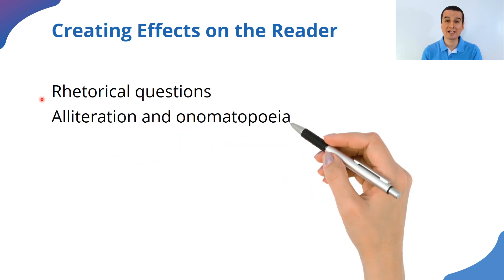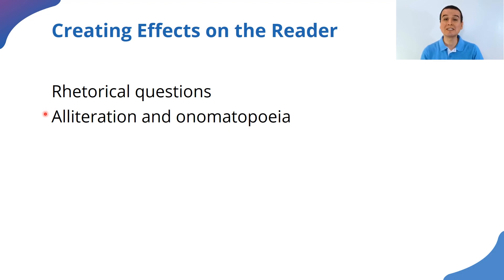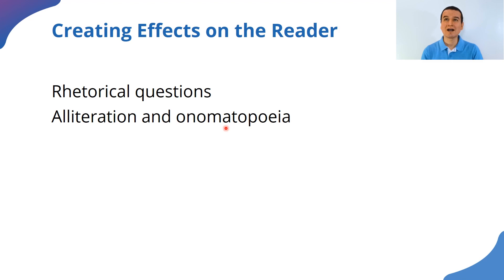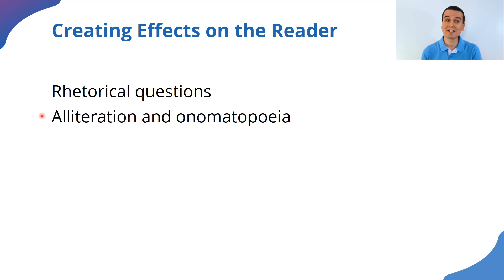Another resource for creating effects on the reader is alliteration, which is the repetition of certain sounds to create the effect of flow in the story, connecting words through the way they sound — in an auditory manner. We can also use onomatopoeia, which is describing with words some sounds that the reader may hear. For example, if I say the bomb exploded — boom! — I'm involving the reader in the story. If I say the cat approached and he went meow, I feel I involve the reader in the narration, and in that way I am creating a certain effect in him or her.